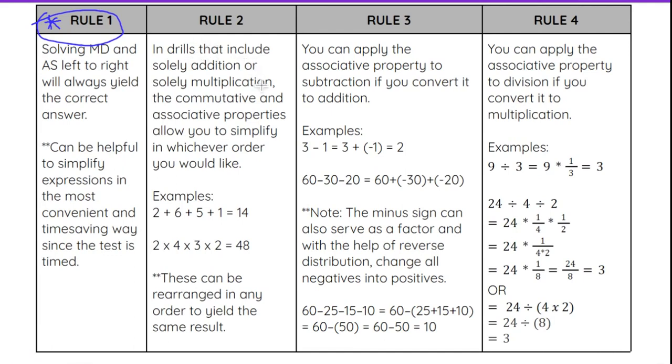In some expressions or drills that include solely addition or only multiplication, we can use the commutative and associative properties to help us switch around the order or switch around which portions we do first. For example, 2 + 6 + 5 + 1, we can do that in any order. I could add 2 + 1, then 6, then 5. I could start with 5 + 1 and then add in the 2 and the 6.